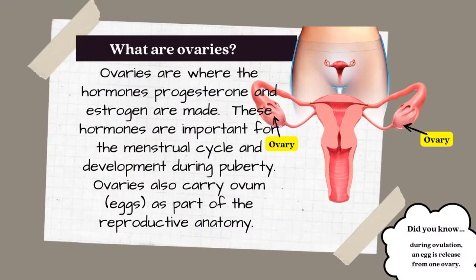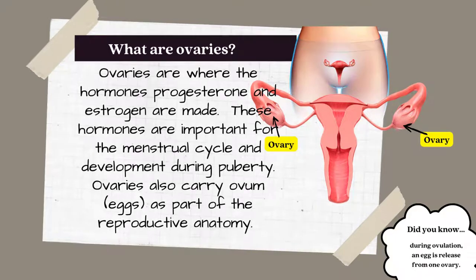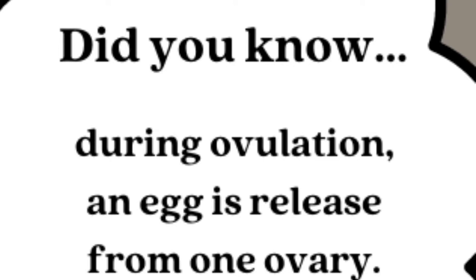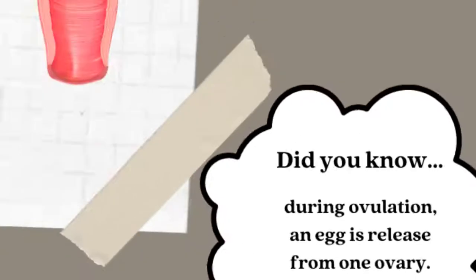Ovulation — what are the ovaries? Ovaries are where the hormones progesterone and estrogen are made. These hormones are important for the menstrual cycle and development during puberty. Ovaries also carry ovum, or eggs, as part of the reproductive anatomy. Did you know during ovulation, an egg is released from one ovary?